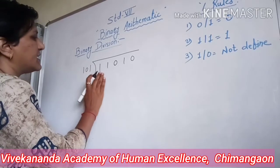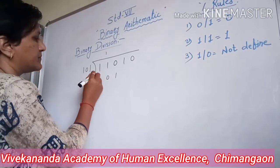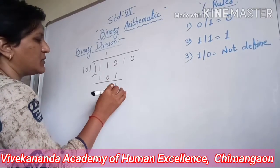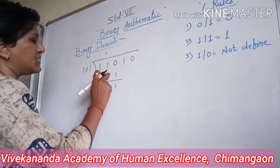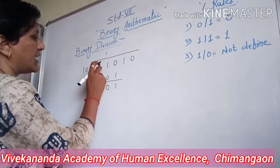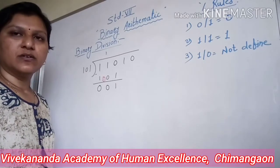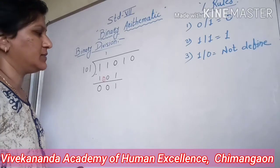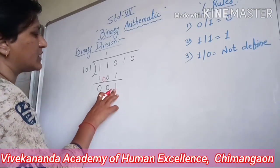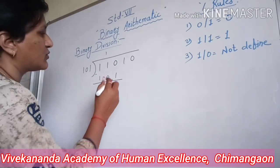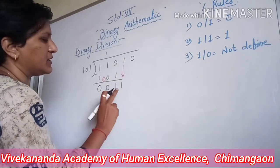Dividing 110 by 101: using binary subtraction, 0 minus 1 gives 1 with a borrow, 1 minus 0 minus 1 gives 0, and 1 minus 1 gives 0. Now as the result is only one digit, we bring down the next digit and get 11. But 11 is a 2-digit number while the divisor is 3 digits, so division is not possible.